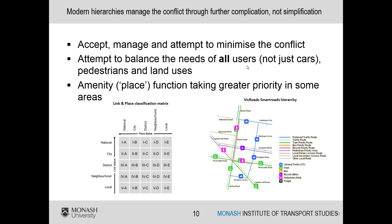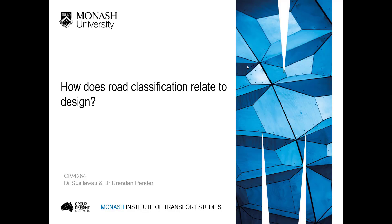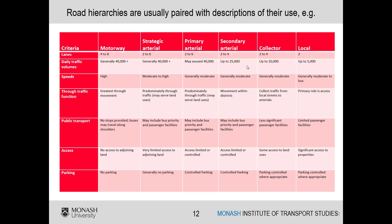The status of a road within the hierarchy is clearly defined in terms of road function, traffic volume, and design characteristics, including design speed, average running speed, cross-section, and right-of-way, as well as access to buildings and land use.